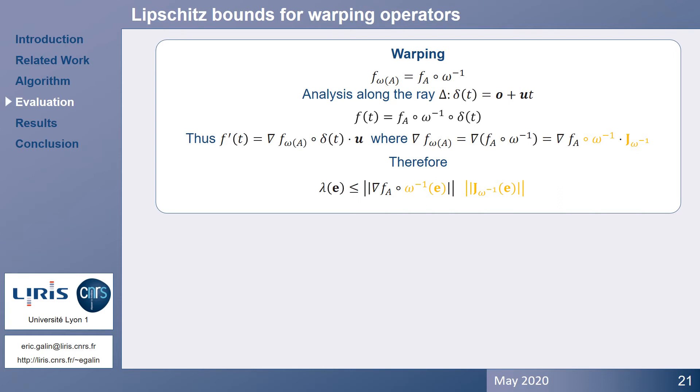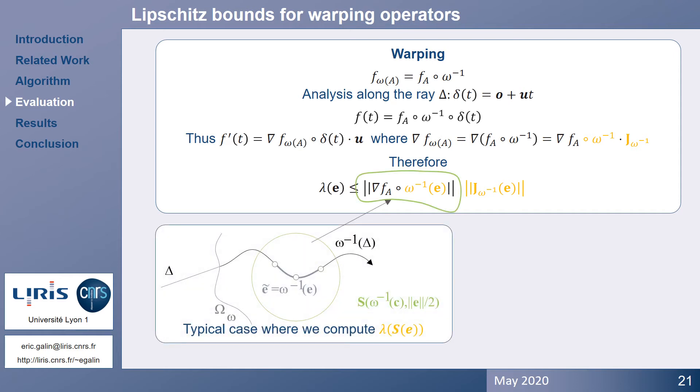Let's take a look at operators. Warping is the most challenging case. Recall that warping is an operator that deforms space, and consequently the object embedded in the control space. Two terms arise when computing the first derivative of the field function along the ray.